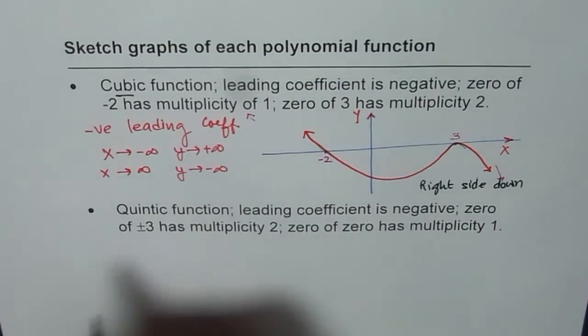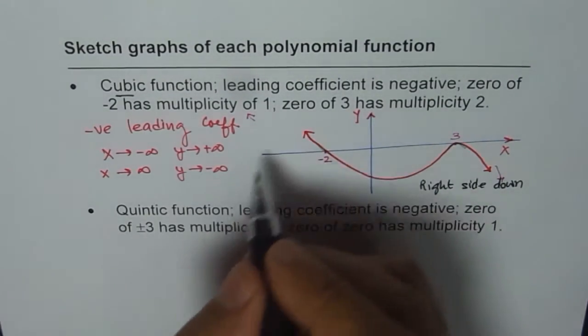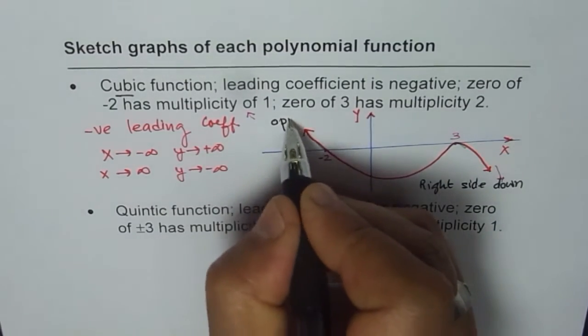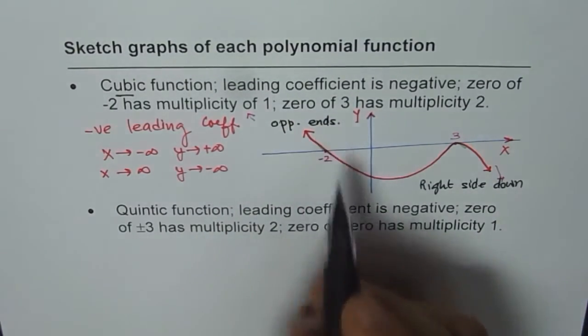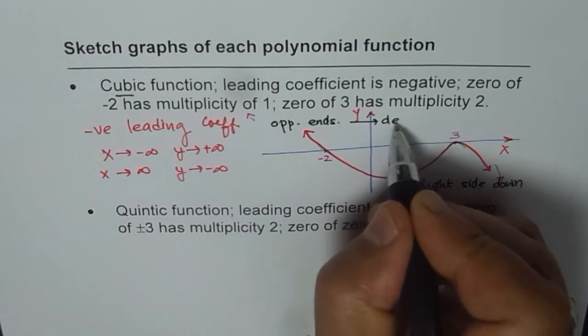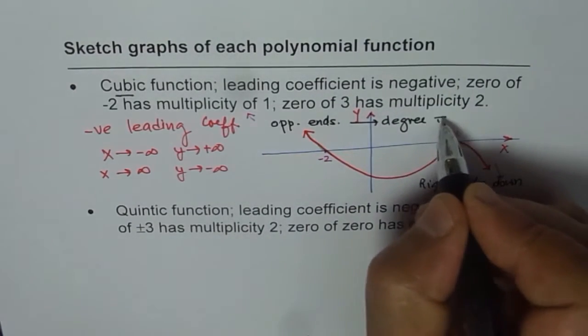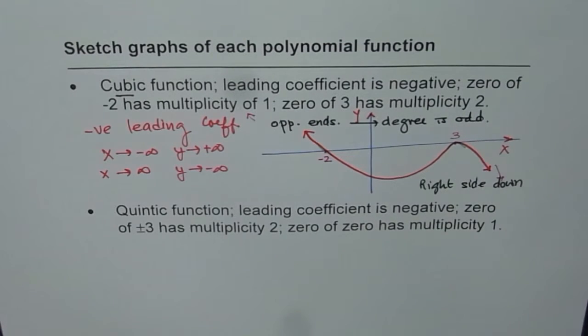And cubic means odd degree. So odd means opposite ends. This is because the degree is odd. So that helps.